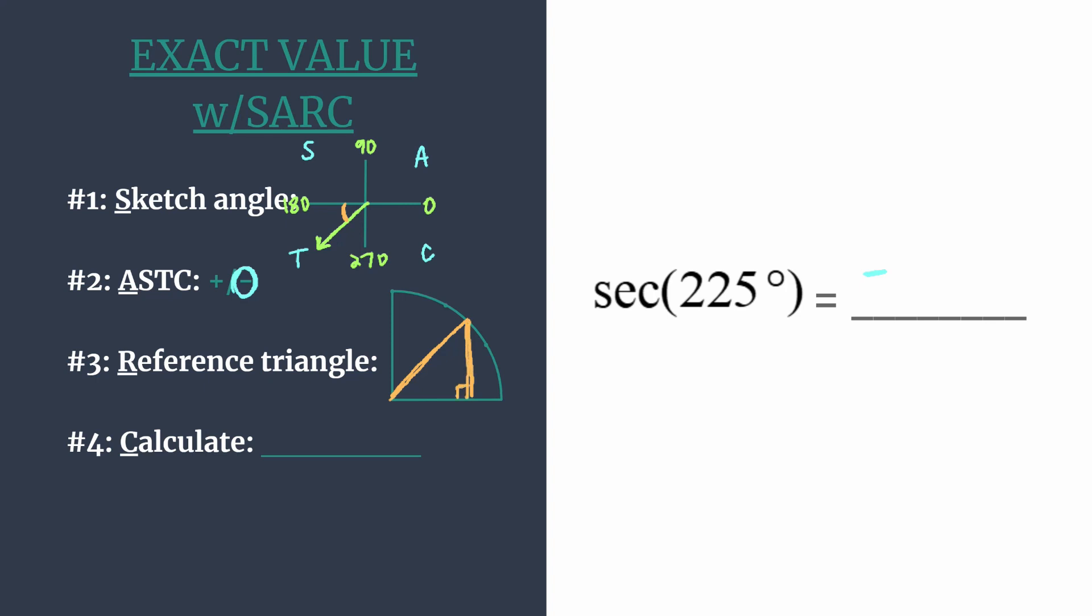From our knowledge of those types of triangles, we know that the corresponding ordered pair must be square root of 2 over 2, square root of 2 over 2.